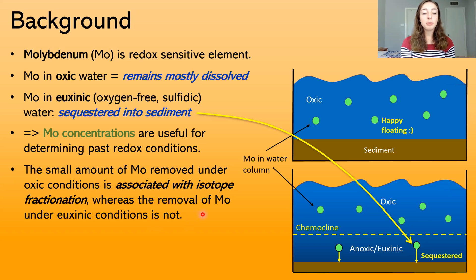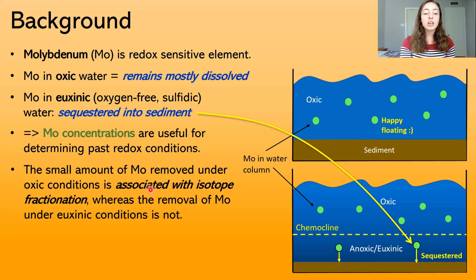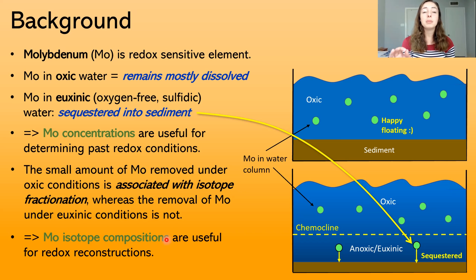Moreover, there is an isotopic fractionation associated with the sequestration of the small amount of molybdenum that does become sequestered in oxic conditions, versus a lack of isotopic fractionation when molybdenum is sequestered under euxinic conditions. Therefore, we can also use molybdenum isotopic compositions in ancient sediment as a paleoredox proxy.